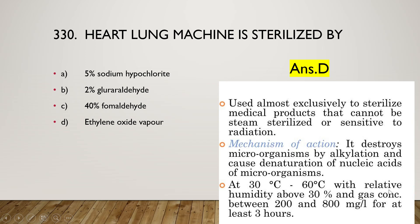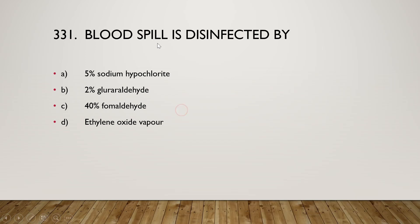Ethylene oxide vapor is effective at 30 to 60 degrees Celsius with relative humidity above 30%, and gas concentration between 200 to 800 mg per liter for at least three hours — this is effective to kill all microorganisms and sterilize medical products.